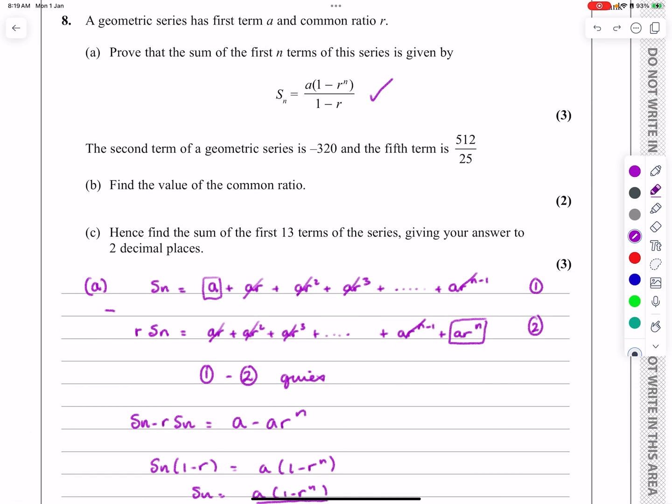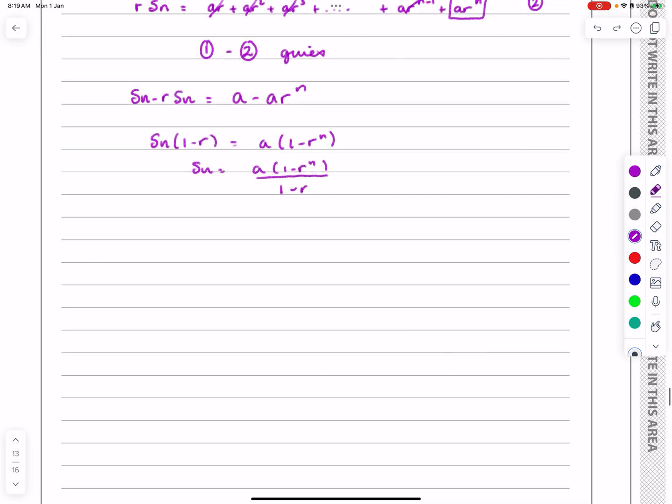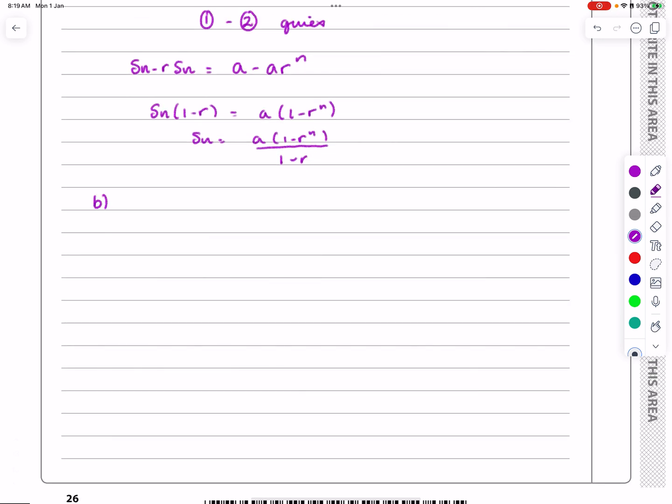Right, what does part B say? Part B says the second term of a geometric series is minus 320, the fifth term is 512 divided by 25. Find the common ratio. It's not complicated.